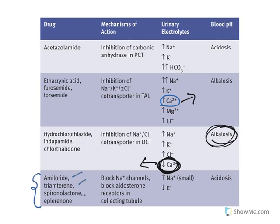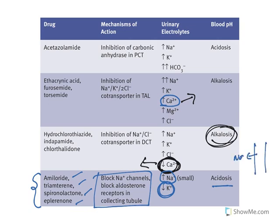Potassium-sparing diuretics — amiloride, triamterene, spironolactone, and eplerenone — block either sodium channels or aldosterone, causing sodium loss while retaining potassium. They cause acidosis: normally when sodium is reabsorbed, a proton is exchanged out. When sodium reabsorption is blocked, protons are retained in the body, making blood more acidic and causing acidosis.